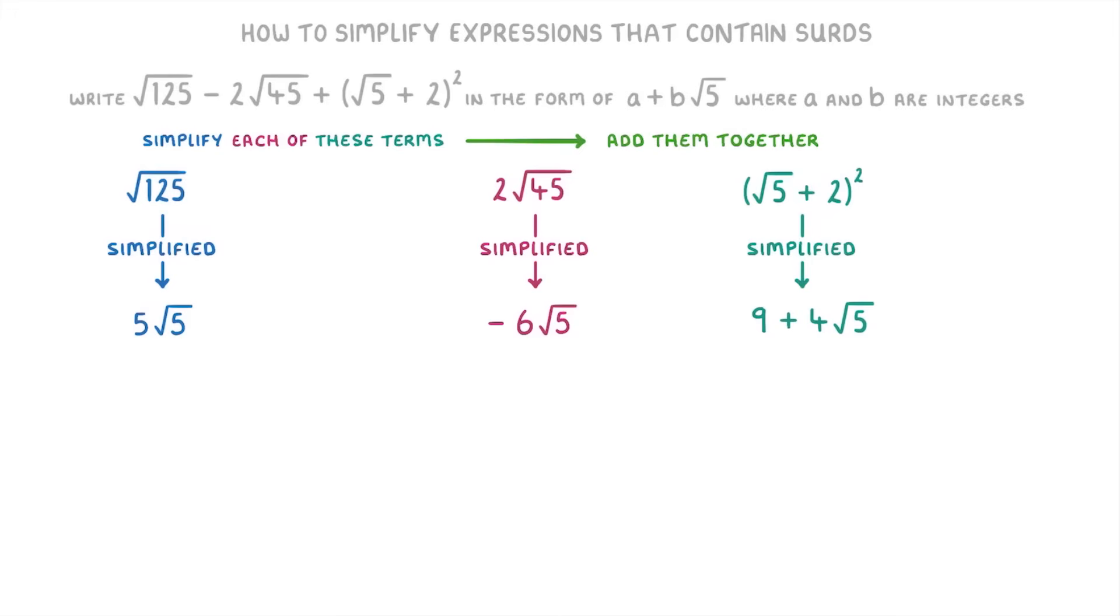The final step is just to add these together, so 5√5 minus 6√5 plus 9 plus 4√5, which simplifies to 3√5 plus 9. However, because the question asked for our answer in the form of a plus b√5, we want to quickly rewrite it as 9 plus 3√5, where 9 is the a and 3 is the b.